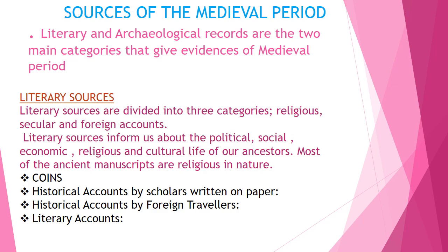Now let us talk about how we find the different sources of the medieval period. The sources of the medieval period can be divided into literary and archaeological sources. Literary sources are divided further into three categories: religious, secular, and foreign accounts. Literary sources inform us about the political, social, economic, religious, and cultural life of our ancestors.